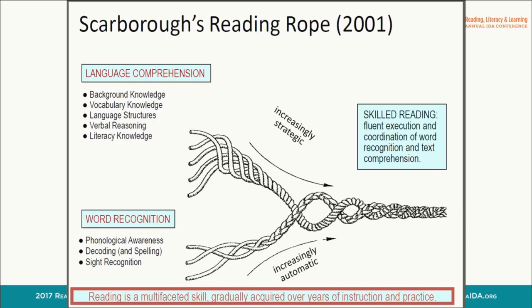In language comprehension, which component has the highest probability to help us understand comprehension — background knowledge, vocabulary knowledge, language structure, verbal reasoning, or literacy knowledge? If you said vocabulary, you are correct. Vocabulary is the best measure we have for assessing comprehension, but you can't teach vocabulary without background knowledge. For assessing comprehension, the best measure is vocabulary, and we know background knowledge helps build vocabulary.